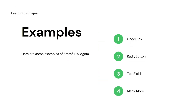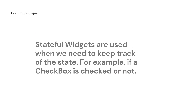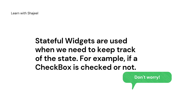Let's look at some examples of stateful widgets. First, we have the checkbox — it can be checked or unchecked, so it has two states. The radio button is also a great example because it also has two states. We also have the text field, because we want to maintain the text input inside it. There are many more default stateful widgets available. Stateful widgets are used when we need to keep track of state, for example whether a checkbox is checked or not.